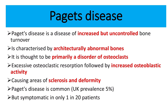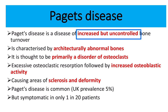Paget's disease is characterized by increased and uncontrolled bone turnover. It features architecturally abnormal bone — the architecture and formation of the bone is destroyed. It is primarily a disorder of the osteoclast, with excessive osteoclastic resorption followed by increased osteoblastic activity.